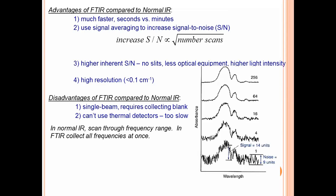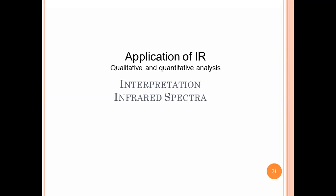Advantage of FTIR compared to IR: much faster, uses signal averaging to increase signal-to-noise, no slits required, less optical requirement, high resolution.